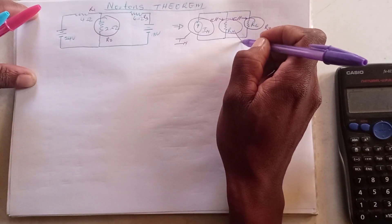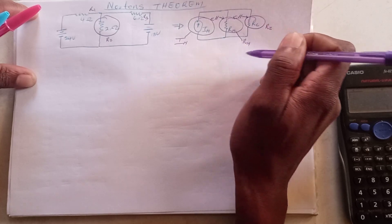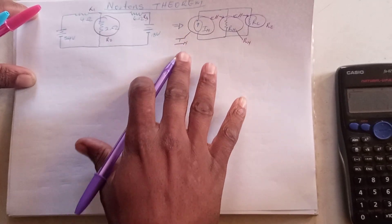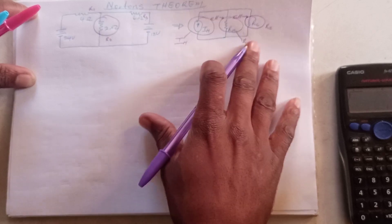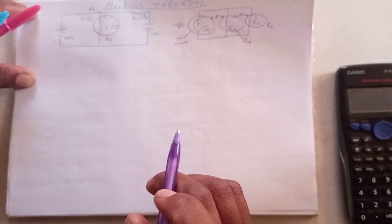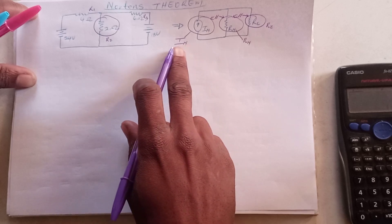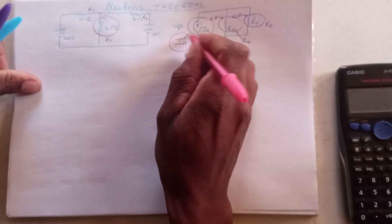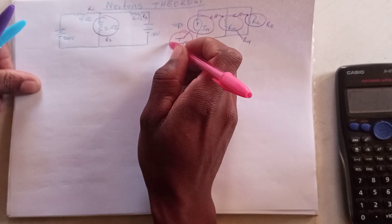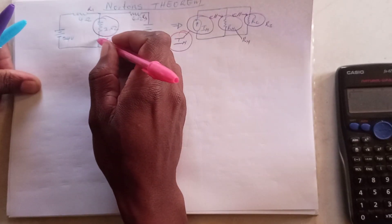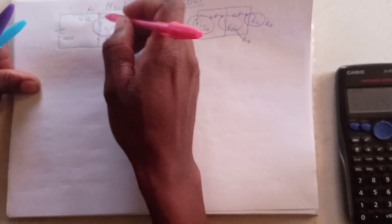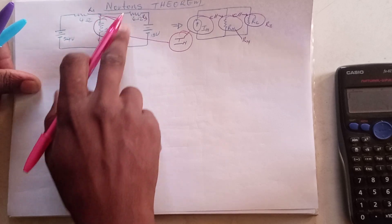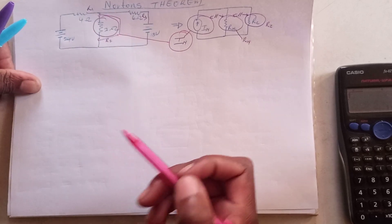To calculate Norton's current and Norton's resistance there are a few things to consider. When we calculate Norton's current, what we will do to this circuit is remove the load resistor and then make a short there.